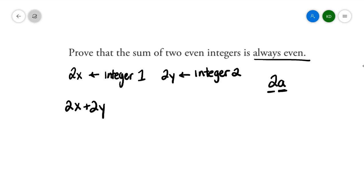What I'm going to do here is I'm going to rearrange how this looks. What I notice is that both these terms are divisible by 2, so I'm going to factor a 2 out. When I divide both of these terms by 2, I'm left with 2 multiplied by x plus y.